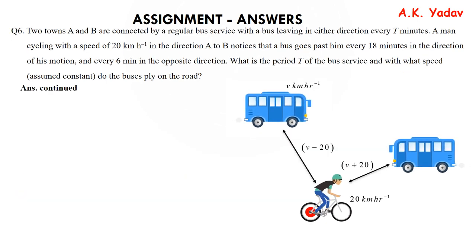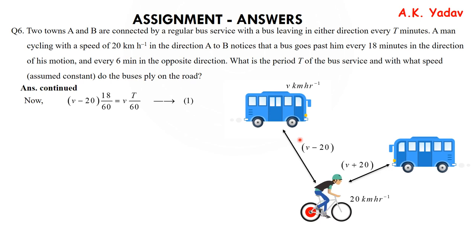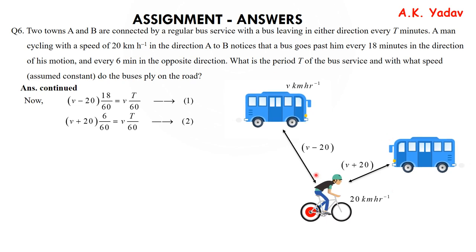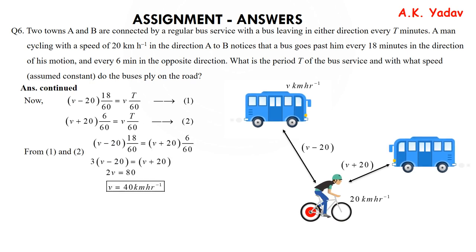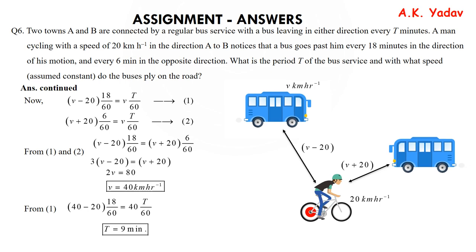Setting both relative distances equal to the bus separation VT/60 gives two equations. Solving simultaneously: V = 40 km/h. Substituting back gives T = 9 minutes. So the bus speed is 40 km/h and the period of service is 9 minutes.